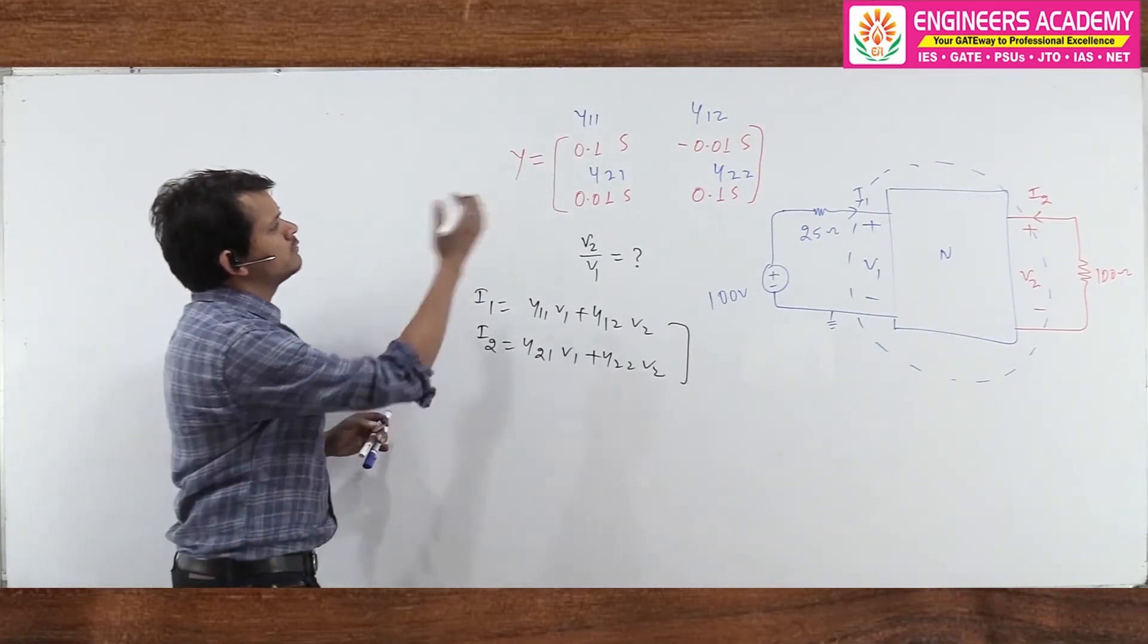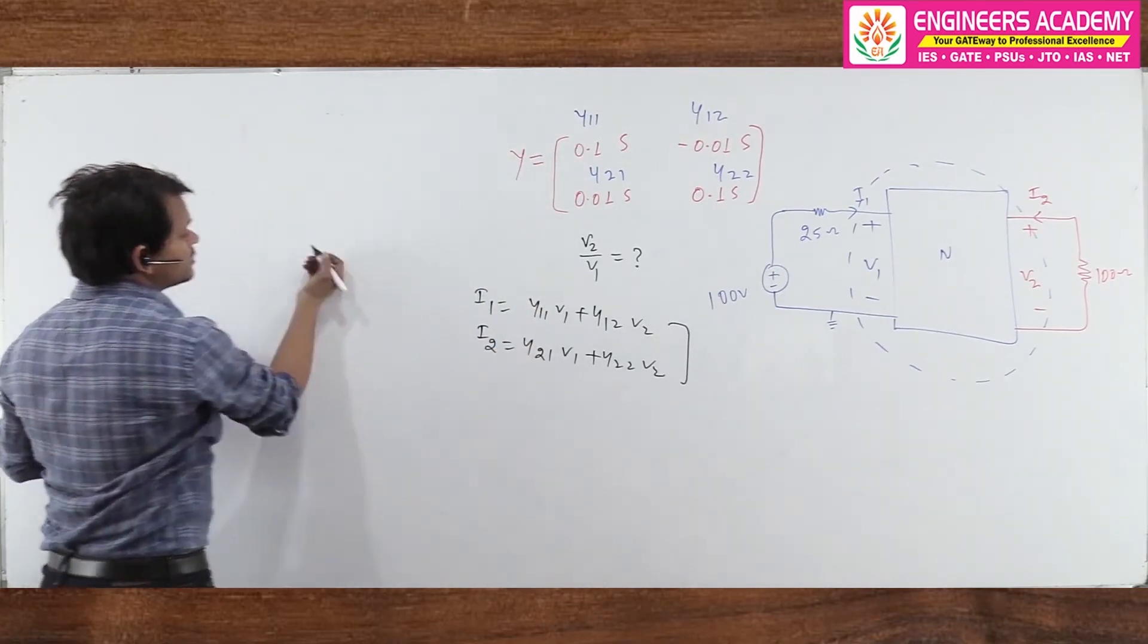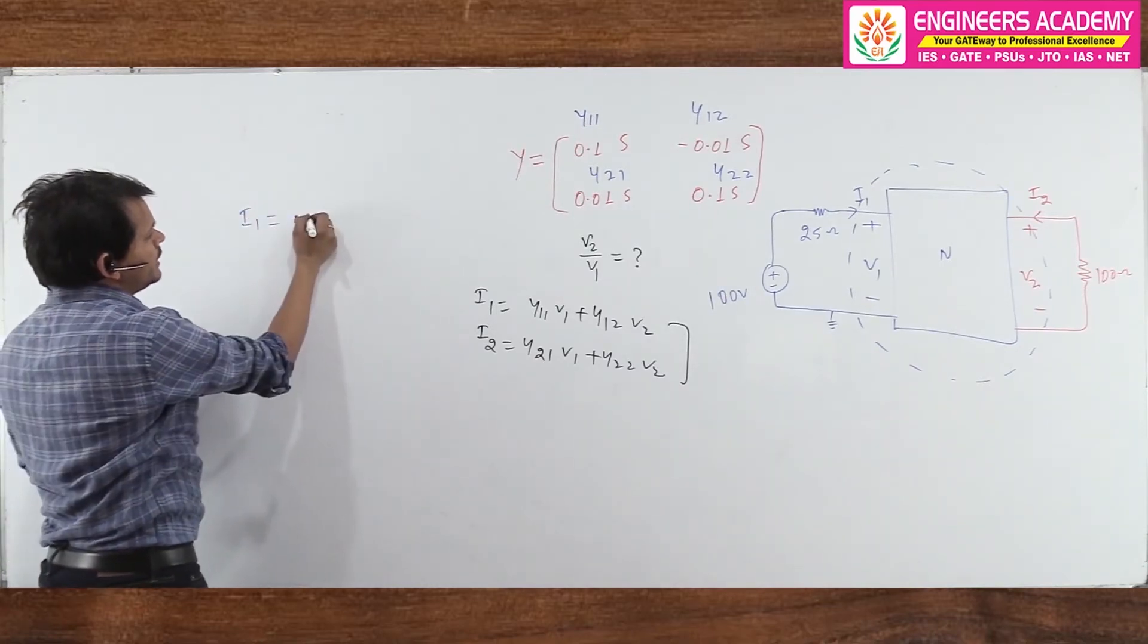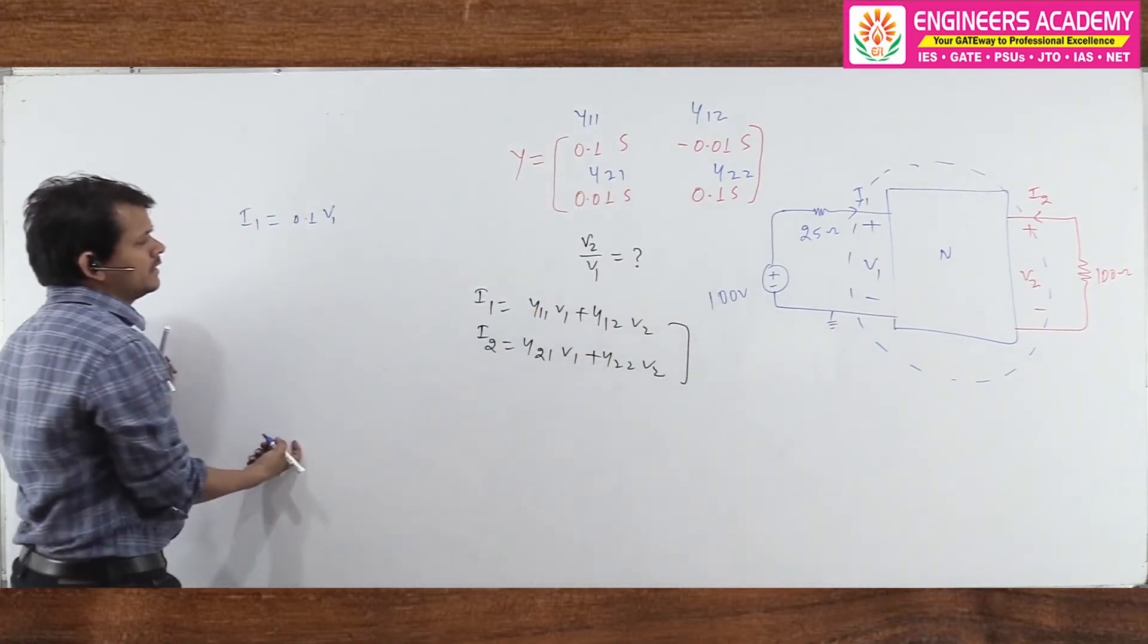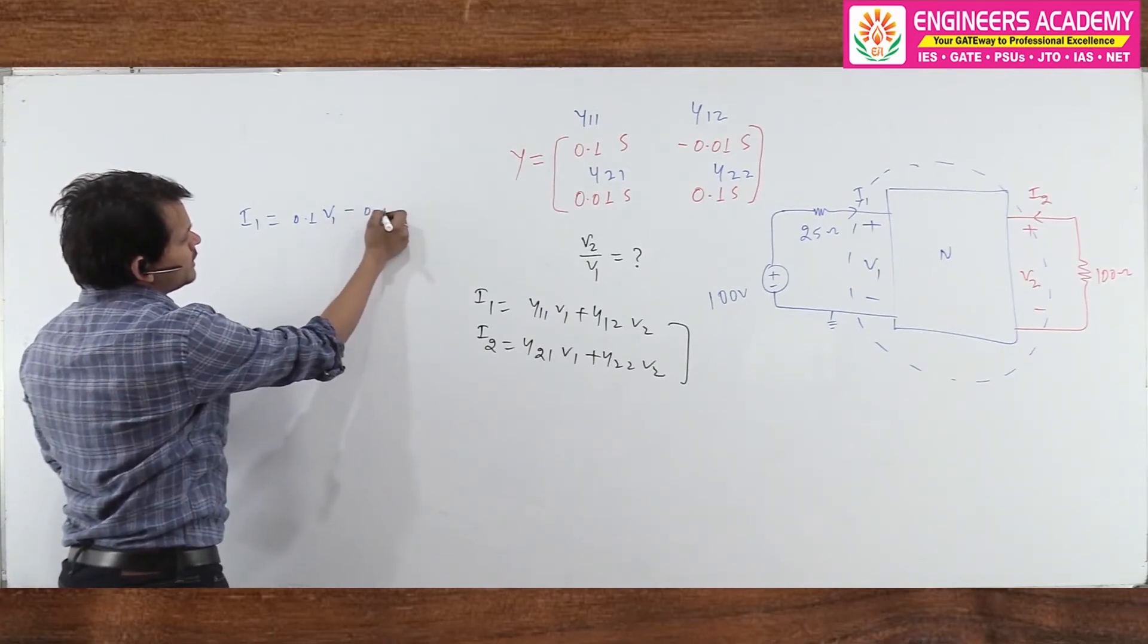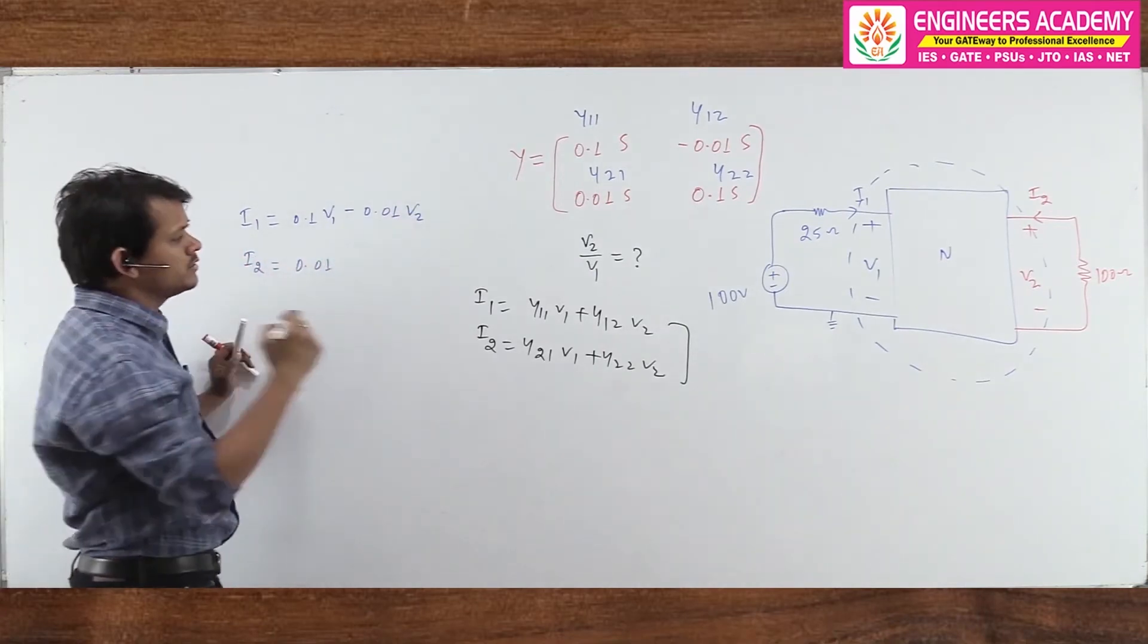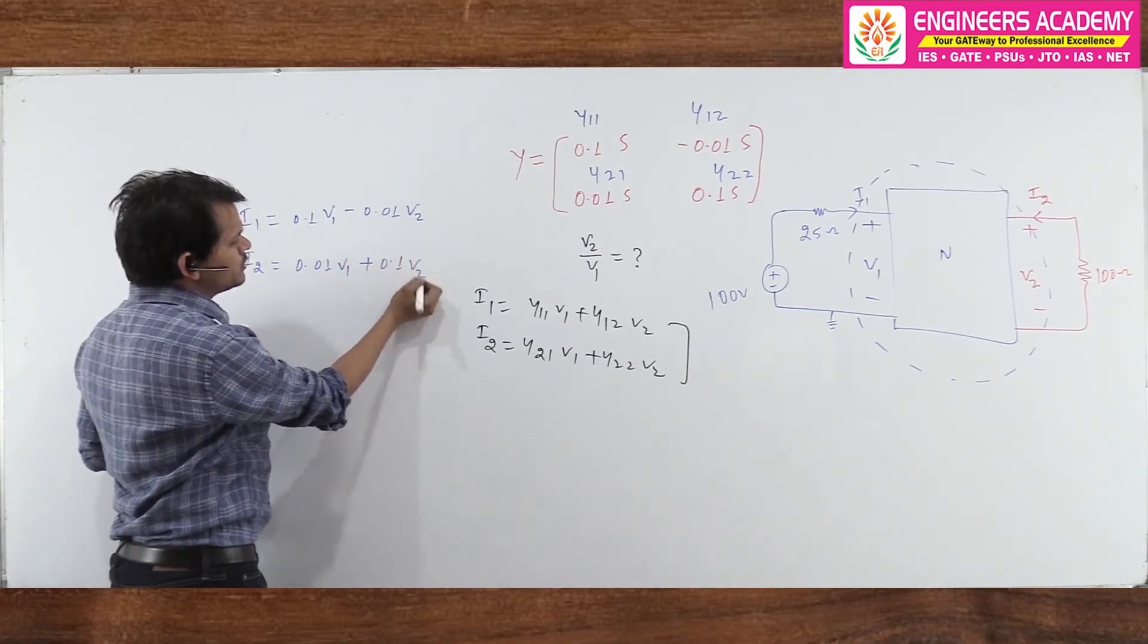Now just try to understand, I just replace Y11, Y12, Y21, and Y22. What about I1? I1 equals Y11 which is 0.1*V1, the unit is Siemens which is the unit of admittance, 0.1, and here minus 0.01*V2. And I2 equals 0.01*V1 plus 0.1*V2. So this is what we have.